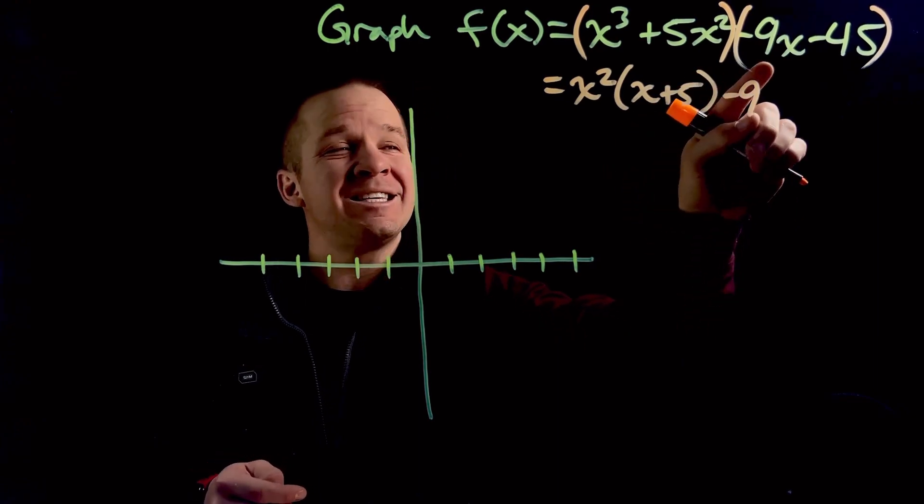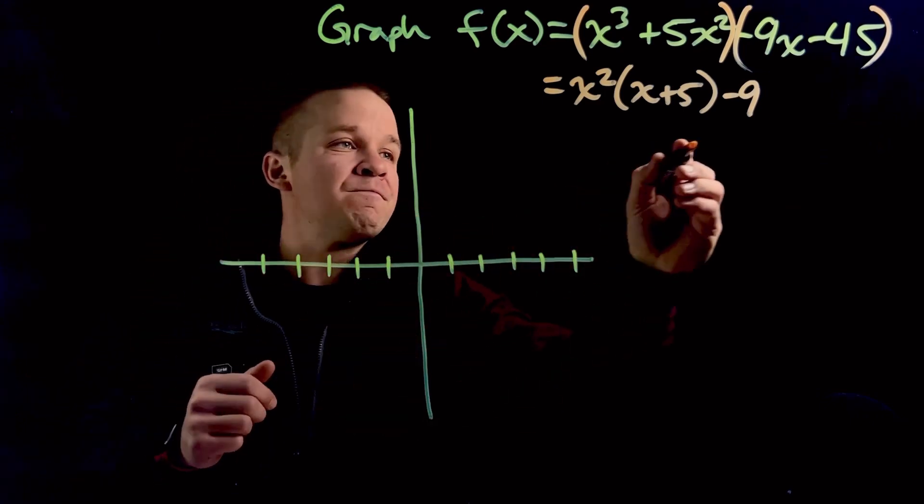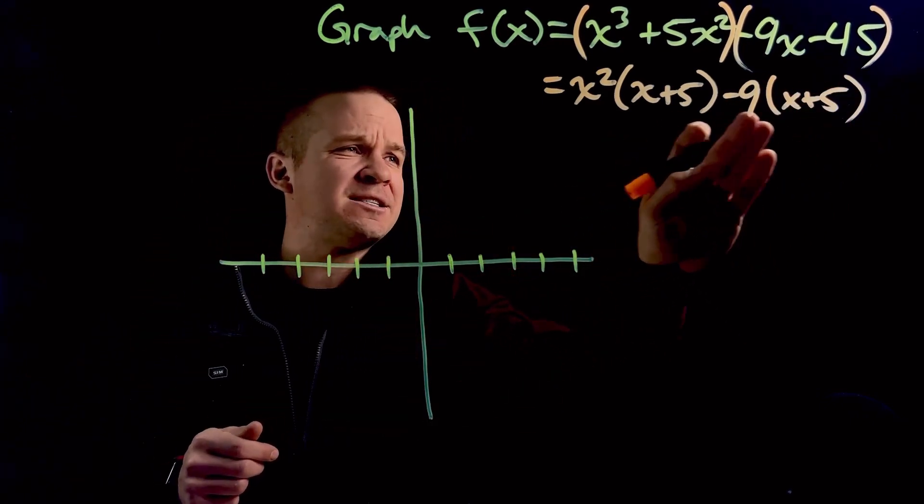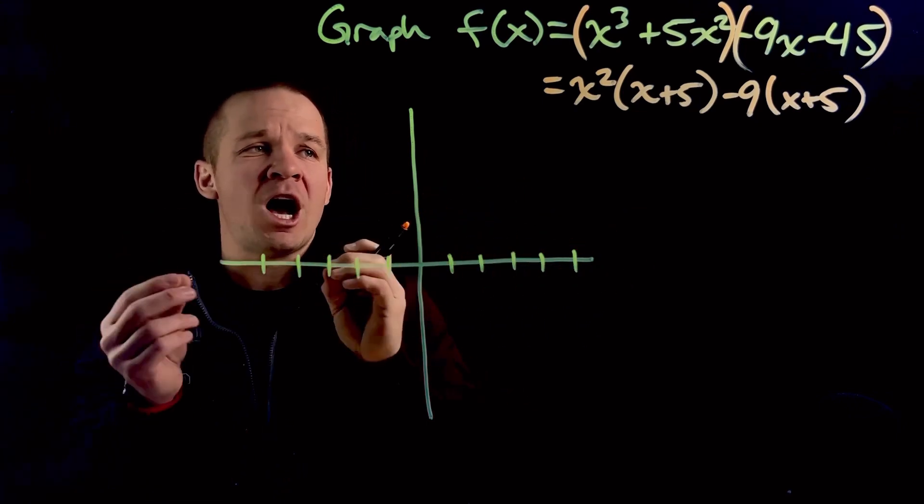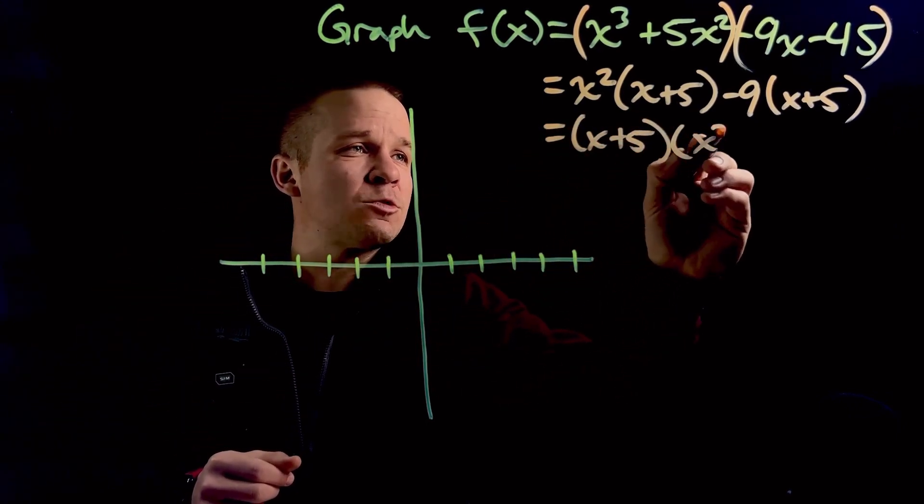Over here, I'm going to take out a negative 9. Anytime that first one in the second group there is negative, I'm going to take a negative out with it. And that leaves me with x plus 5. Oh, this is fantastic. Those two bad boys match up. We're going to take them out. It's going to be x plus 5. And then I'm going to have x squared minus 9.